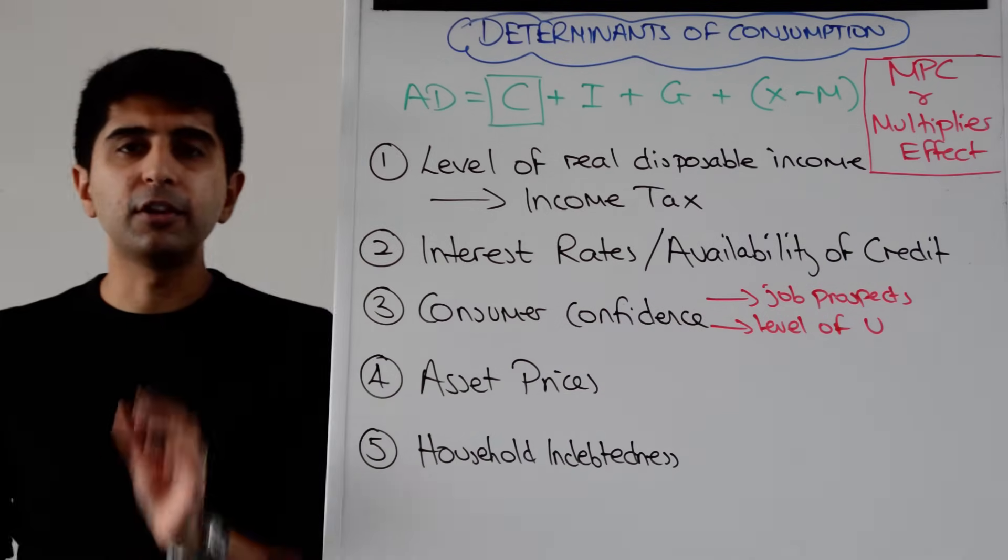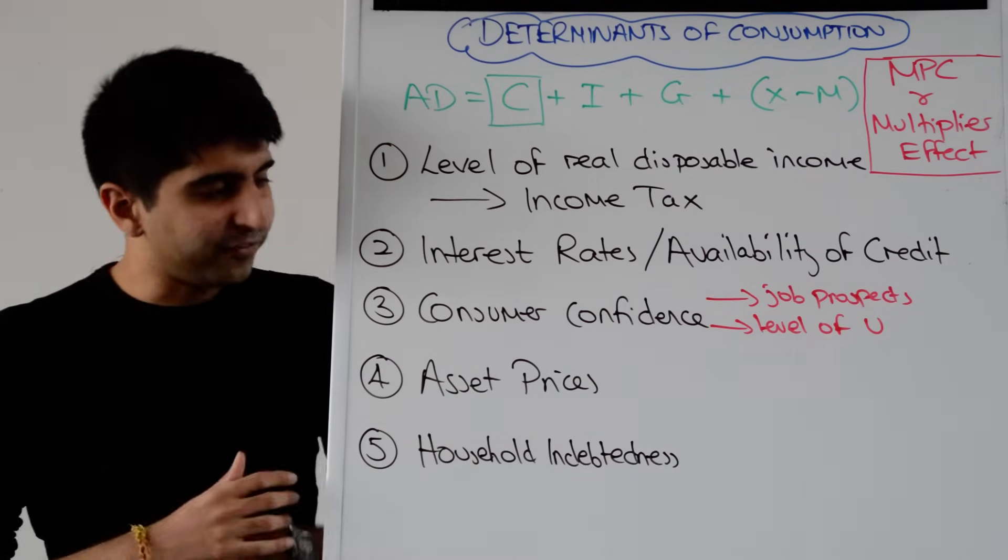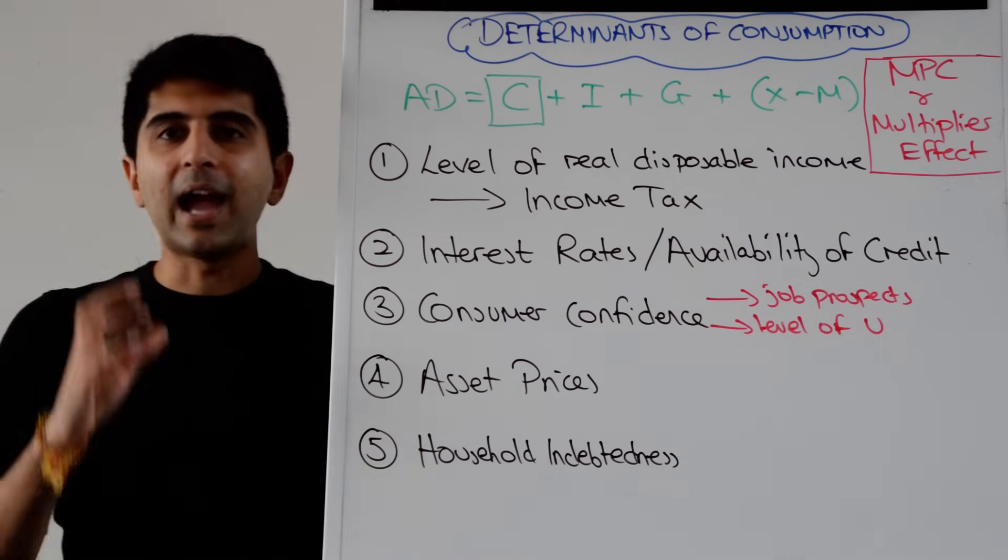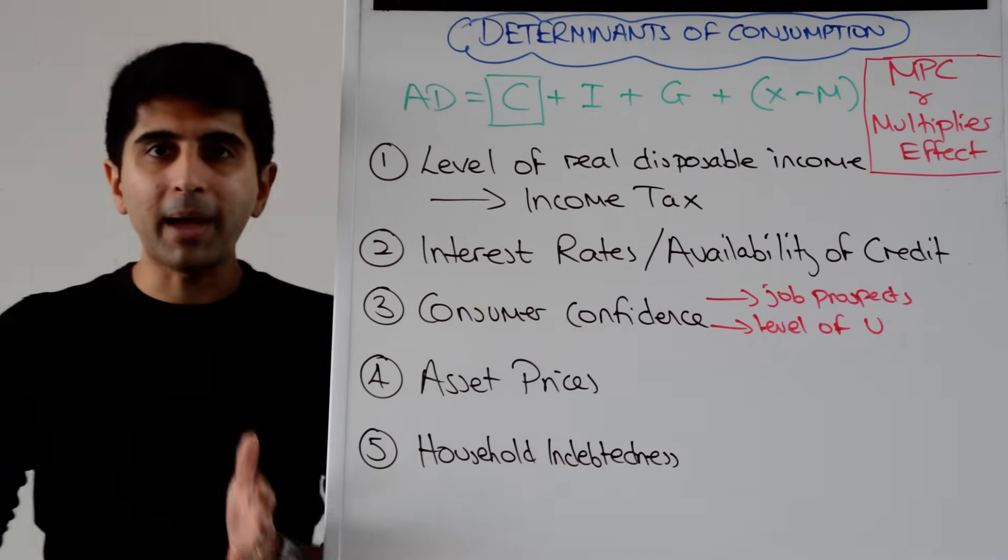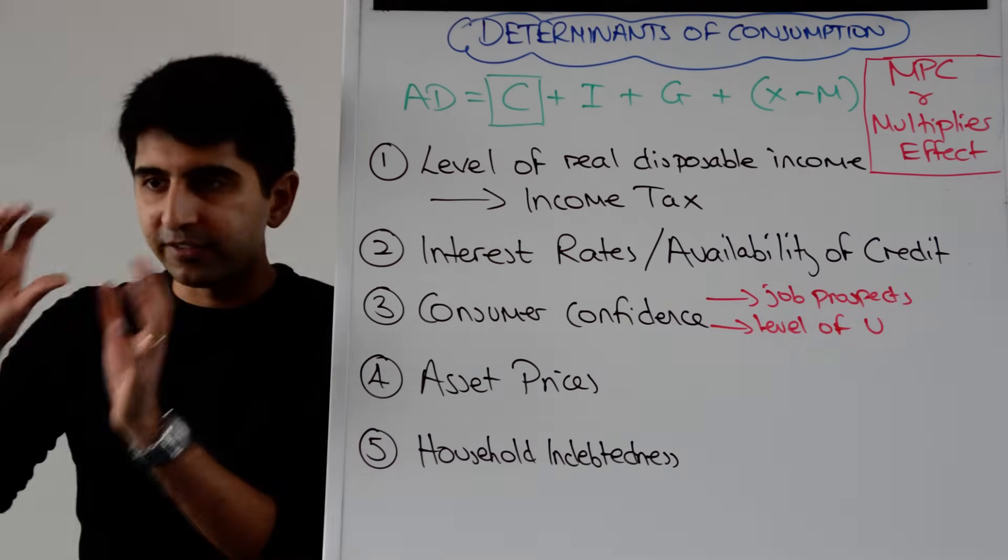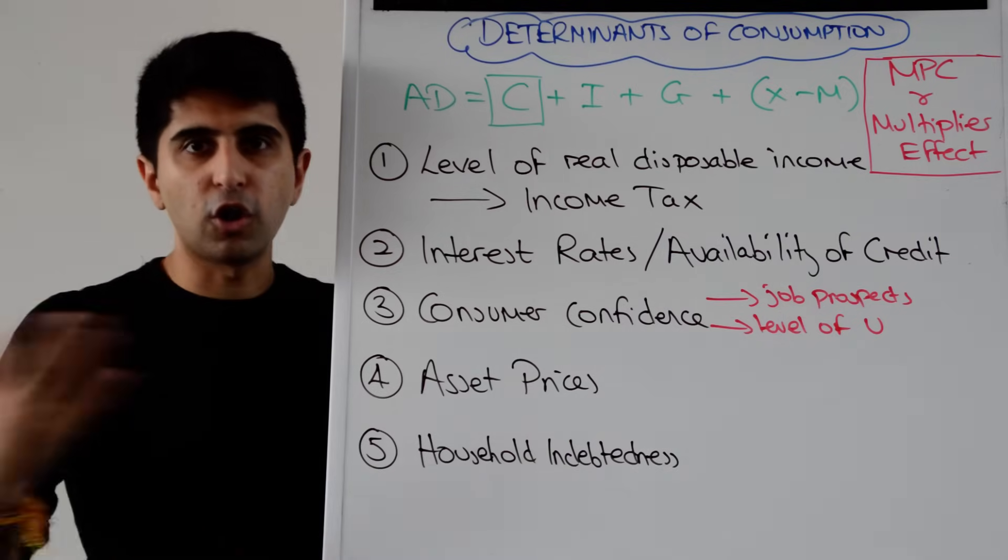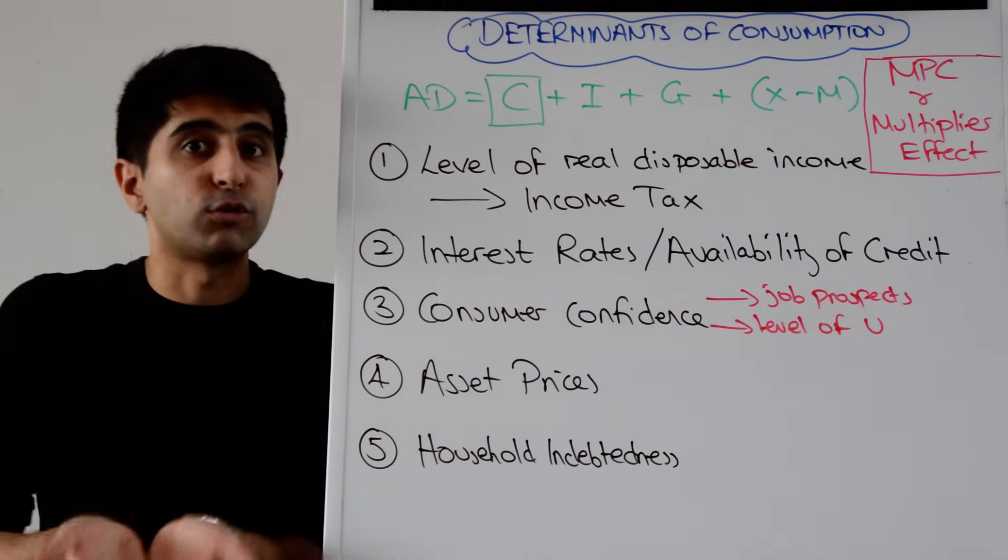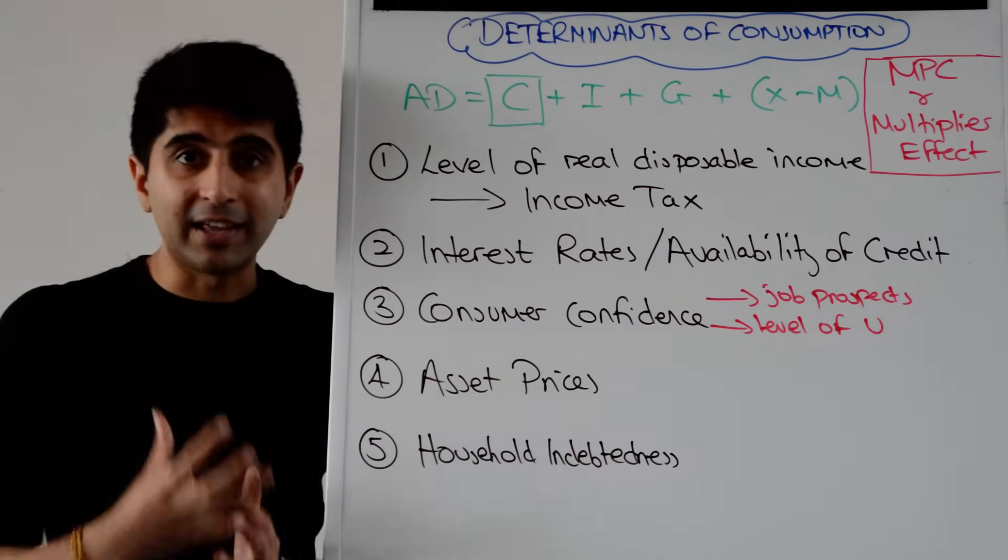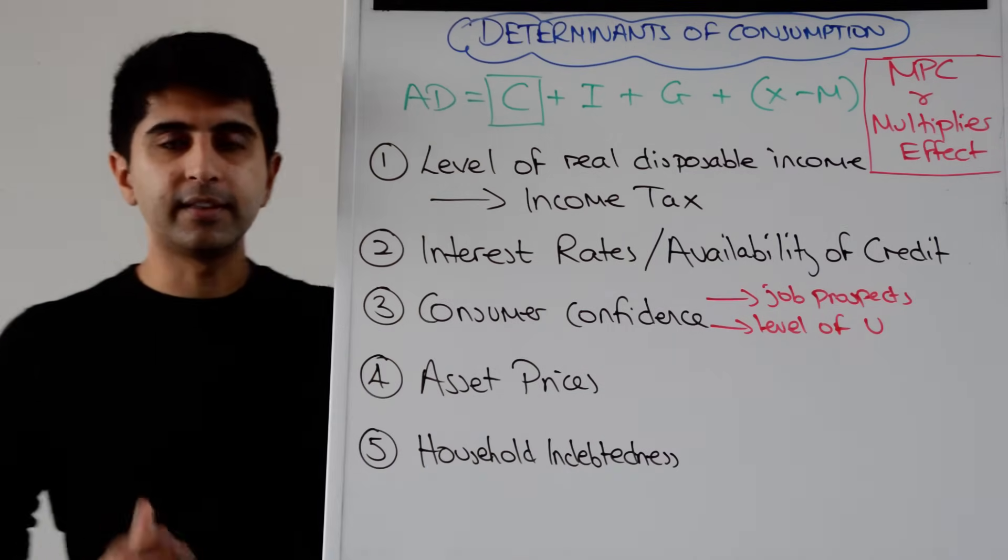And also the level of household indebtedness. If there is a huge amount of household indebtedness in the economy, families living in huge debts, then individuals are more likely to save that money as opposed to spending their money. Just in case things go bad and they need to repay those debts quickly. They would rather save their money to have a pool of money in the bank to then pay off debts in case things go bad. I.e. they lose their job or something like that takes place or interest rates rise. So the greater amount of household indebtedness the greater amount of saving and therefore less consumption taking place in the economy. So these are all the main factors that can affect consumption.